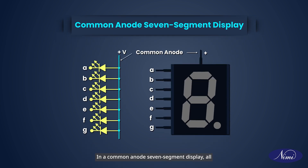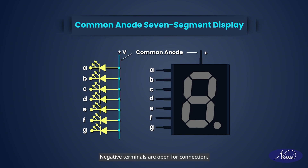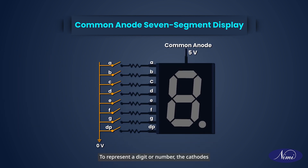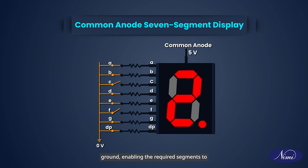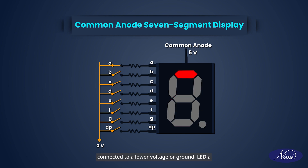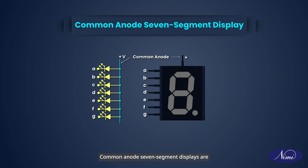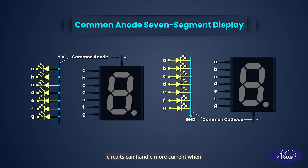In a common anode seven segment display, all anode positive terminals of the light emitting diodes are interconnected and connected to a positive voltage source. Negative terminals are open for connection. To represent a digit or number, the cathode negative terminals of specific LEDs are selectively connected to a lower voltage or ground, enabling the required segments to illuminate. For example, when the cathode of LED A is connected to a lower voltage or ground, LED A will illuminate while the others remain off. Common anode seven segment displays are preferred over cathode ones because logic circuits can handle more current when drawing it in than when sending it out. This is similar to connecting LEDs in the opposite way.